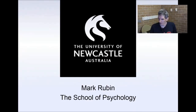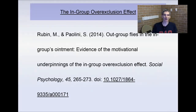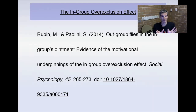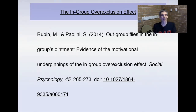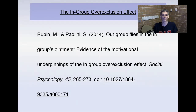We're moving on to look at the in-group over-exclusion effect. This work is reported in Social Psychology with my colleague Stefania Paolini. We gave it the catchy title 'Outgroup Flies in the In-Group's Ointment.' The idea is that sometimes a little thing in your group can cause you a lot of discomfort and make you want to exclude that little thing. The in-group over-exclusion effect is basically about excluding potential out-group members when you're unsure whether they belong to your group. We were looking at the motivational underpinnings of the in-group over-exclusion effect.